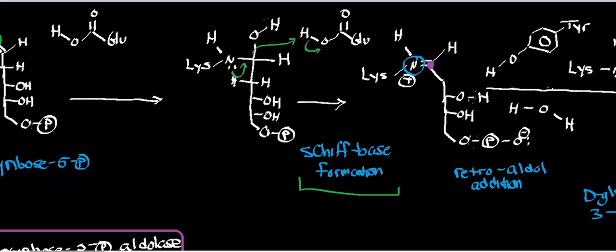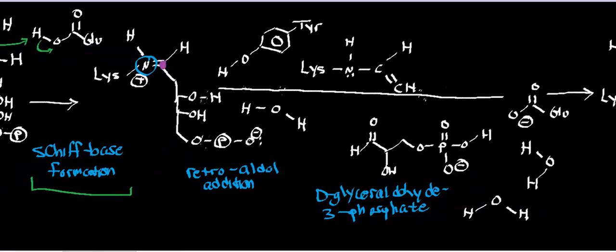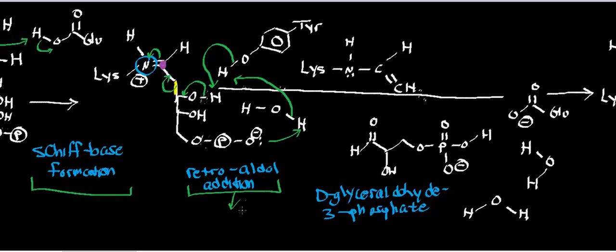The phosphate still attached at the 5-position of what was deoxyribose 5-phosphate does a nucleophilic attack on a proton from water, giving it an extra proton. Water then deprotonates a critical tyrosine residue in the active site. The tyrosine phenolate anion deprotonates a hydroxyl group, leading to aldehyde formation, and then the highlighted bond collapses the Schiff base. This retroaldol addition step is what gives the enzyme the term aldolase.